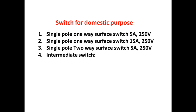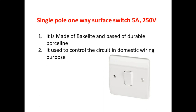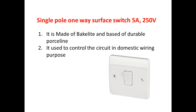For domestic purpose there are four types of switches. First is the single pole one-way surface switch 5 ampere 250 volt. Second, single pole one-way surface switch 15 ampere 250 volt. Third is single pole two-way surface switch 5 ampere 250 volt. And fourth one is the intermediate switch.